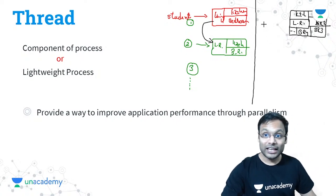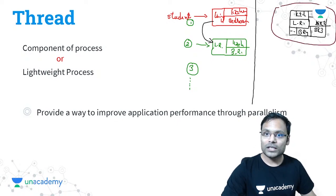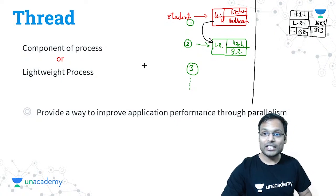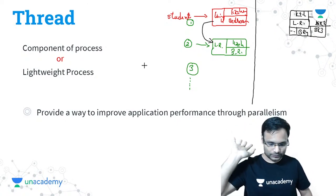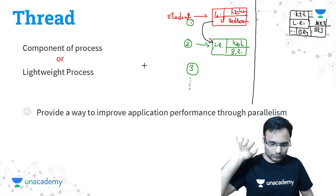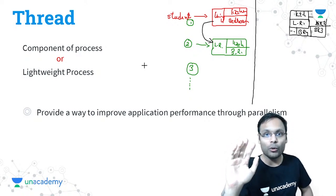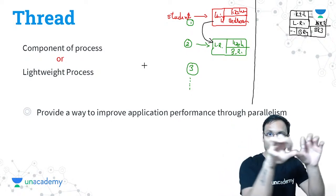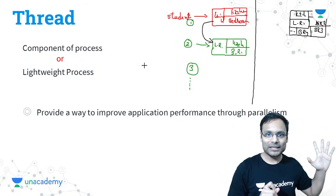The second businessman was earning better — and this is the basic concept of a thread. Now let me map this example to a real operating system example.